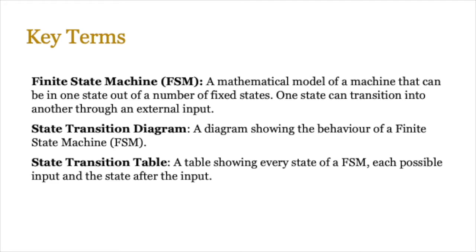FSMs are mathematical models of machines that can be in one state out of a number of fixed states, and one state can transition into another through an external input. For example, hot can transition to cold if an external input such as temperature or coolant is applied. If the temperature falls or a coolant is applied, the state goes from hot to cold. This can also apply to computer systems where a particular state is acted upon by data, leading to a new state.